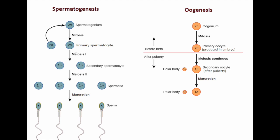Through meiosis I we get secondary spermatocytes, and through meiosis II we get spermatids. Spermatids are not yet mature because they haven't developed a tail and other features. They wait until they mature and are finally converted into sperm. Remember: there is only one mitosis and one meiosis (with its two parts) to get sperm from spermatogonium. Spermatogonium → primary spermatocyte → secondary spermatocyte → spermatid → sperm.